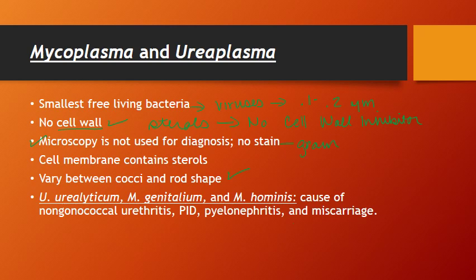There are four organisms we're going to discuss. Three of them — U. urealyticum, M. genitalium, and M. hominis — are all facultative anaerobes. That actually differentiates them from the fourth organism, M. pneumoniae, because M. pneumoniae is a strict aerobe. So the fact that these three can facultatively perform anaerobic respiration is an important distinguishing characteristic.